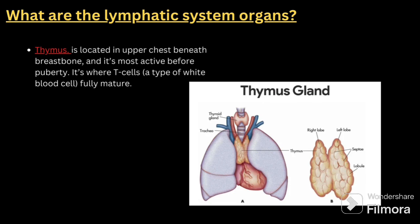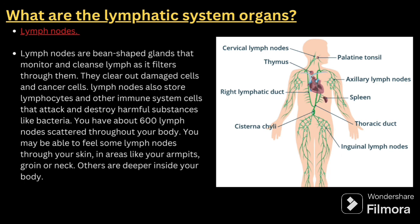Please make a note — don't just listen, write it down so it will be helpful at the time of interviews. The next organ is lymph nodes. Lymph nodes are bean-shaped glands that monitor and cleanse lymph as it filters through them. They clear out damaged cells and cancer cells, and store lymphocytes and other immune system cells that attack and destroy harmful substances like bacteria. You have about 600 lymph nodes scattered throughout the body, felt in areas like your armpits, groin, or neck, while others are deeper inside the body.